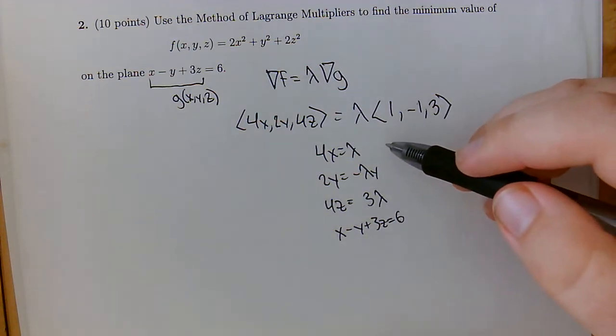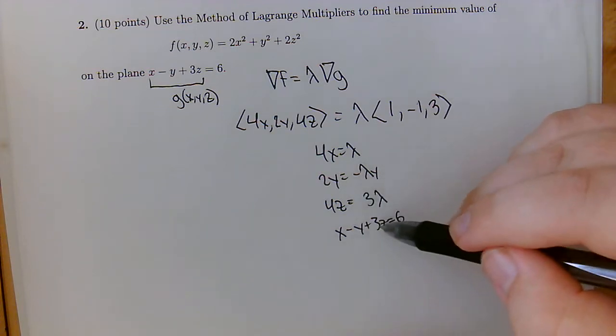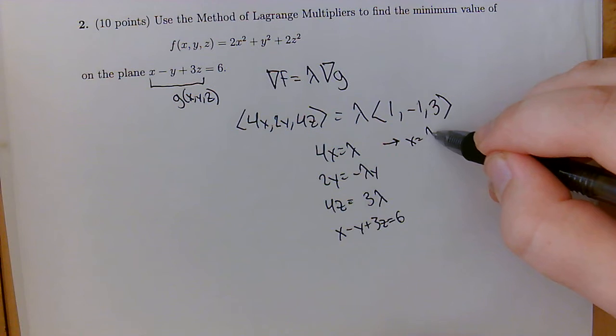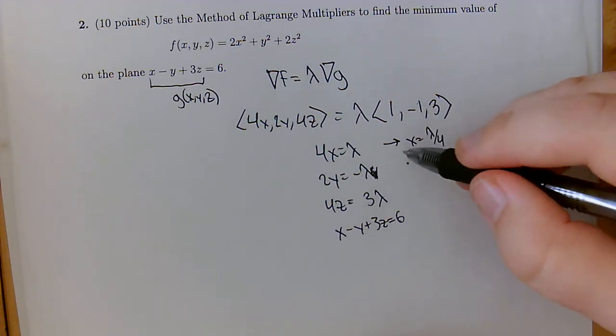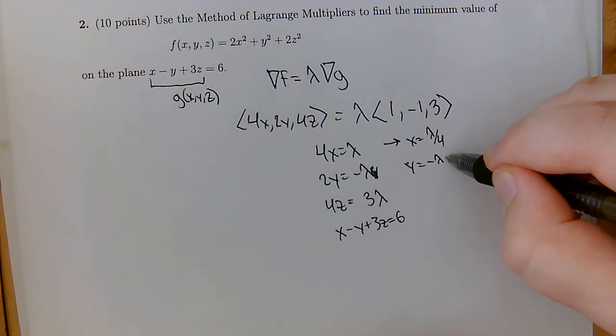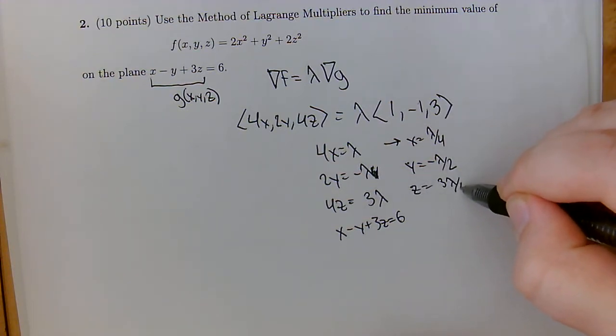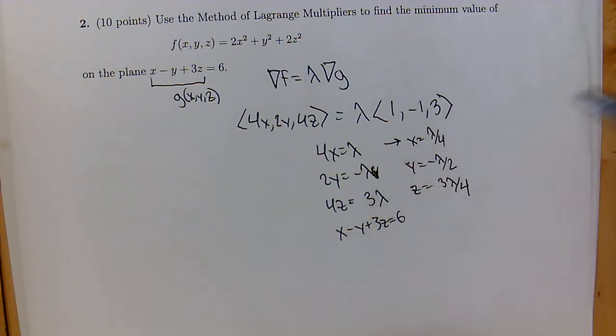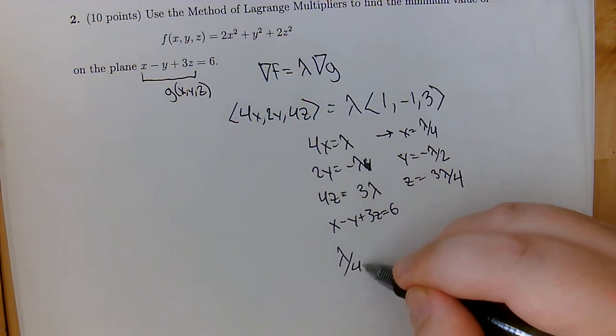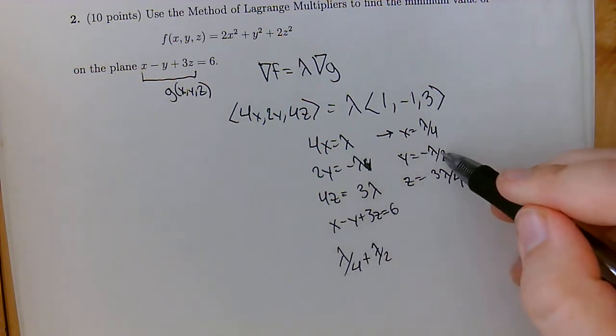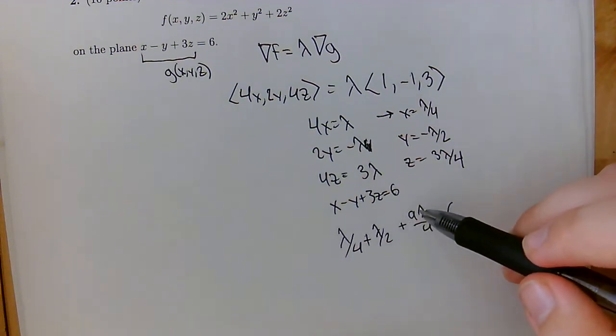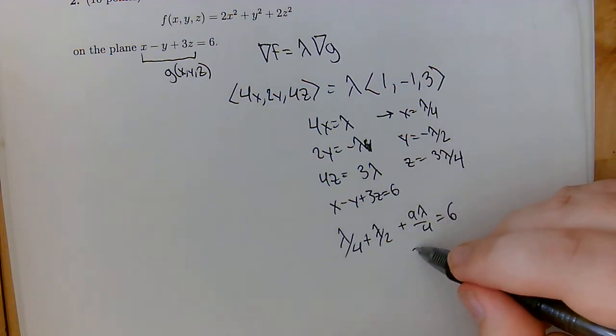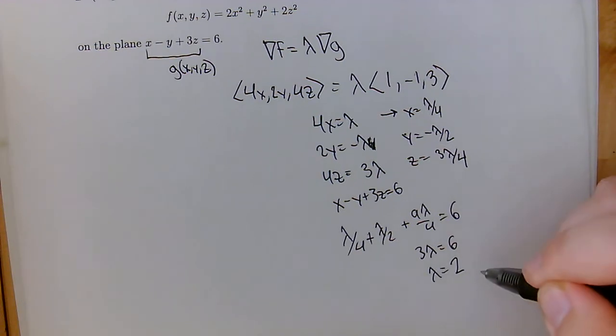Now what I'm going to do here is solve all of these for x, y, and z, and then substitute them into the constraint. So x is lambda over 4. Y is going to be negative lambda over 2, and z will be 3 lambda over 4. So with all of this information, let's go ahead and put this into here. We have lambda over 4 plus lambda over 2, because we're subtracting a negative, and then plus 9 lambda over 4 has got to be 6. So let's add up our fourths here. We have 1 fourth, 9 fourths, and 2 fourths, giving us 12 fourths, or 3 lambda, meaning that lambda is going to end up being 2.